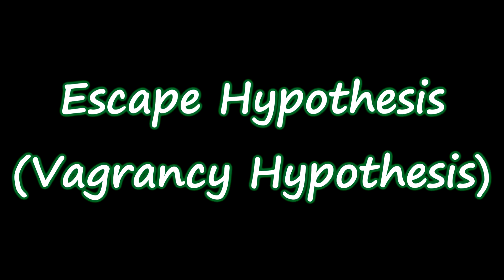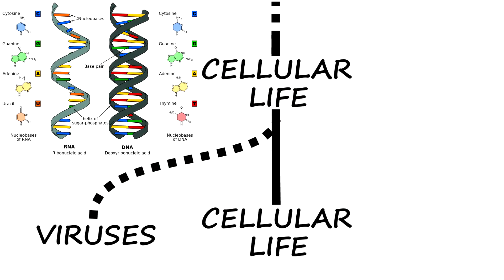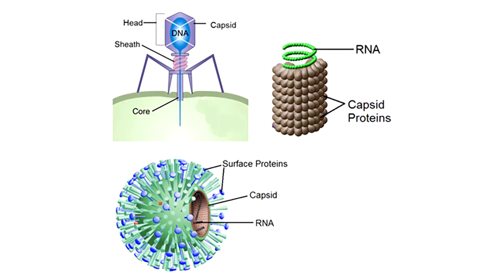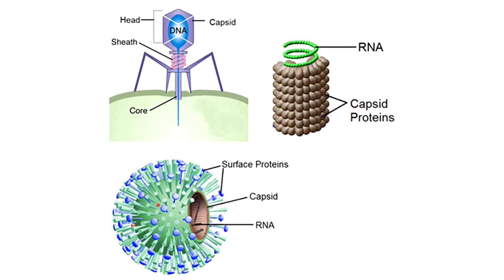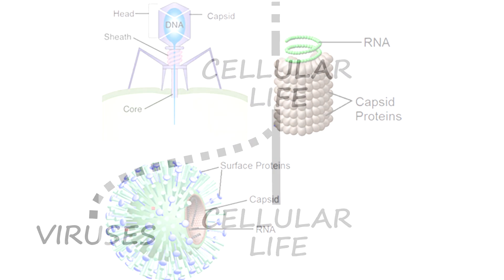The next hypothesis is the escape hypothesis, also known as the vagrancy hypothesis. This one states that viruses evolved from bits of DNA or RNA that escaped from the genes of living cells. However, this does not explain the complex structures such as capsids, as well as other viral structures that are unique to viruses and are not seen in living organisms.